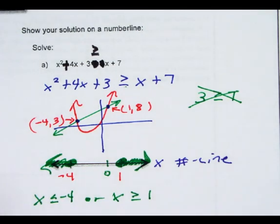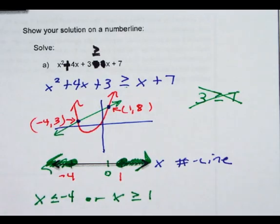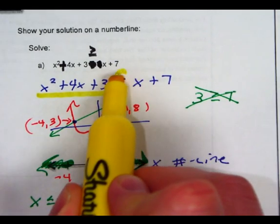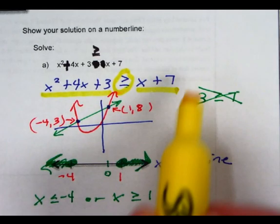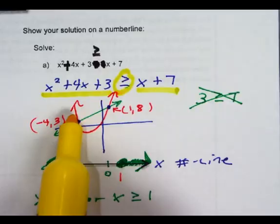If I was expected to write that in domain notation as well. Now, you can also see this on the graph because it's asking you when is the parabola greater than the line. Well, if I look at this picture, when is my red, because my red is my parabola,